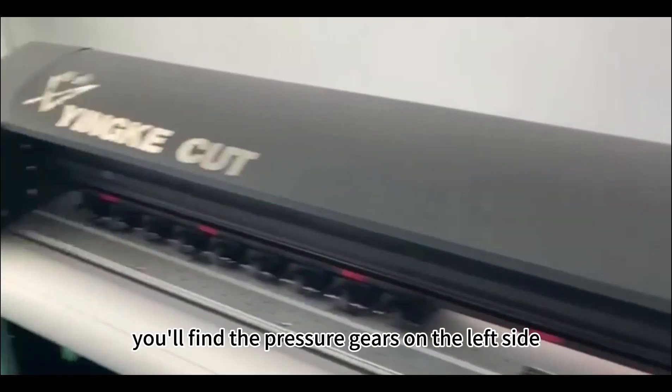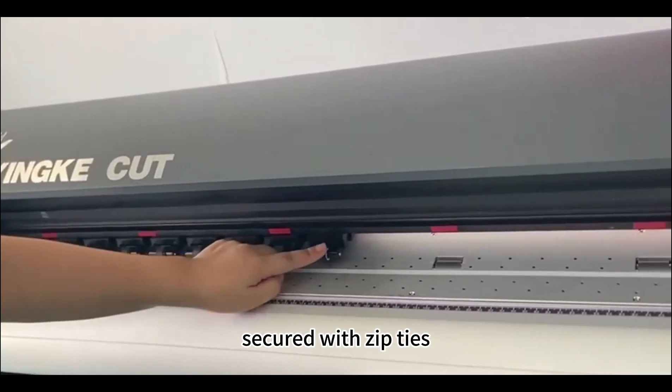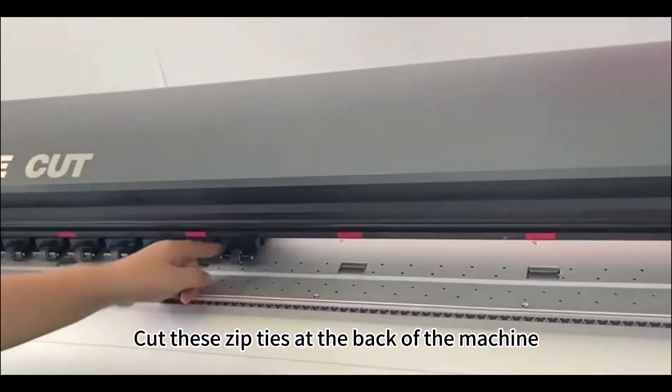After installing the machine, you'll find the pressure gears on the left side, secured with zip ties. Cut these zip ties at the back of the machine.